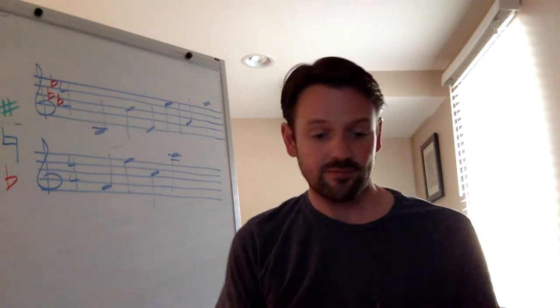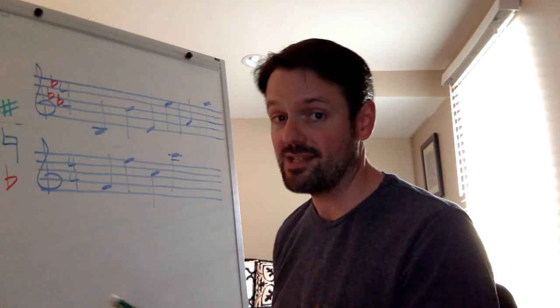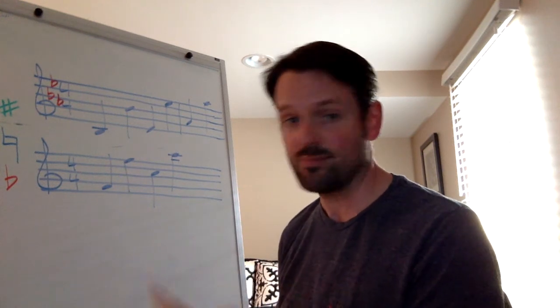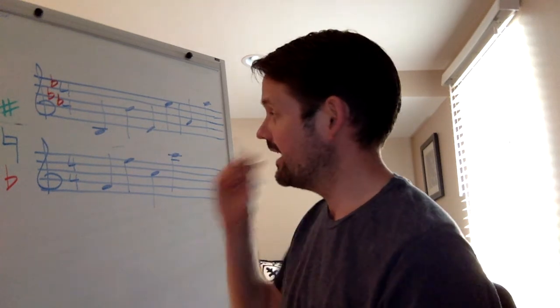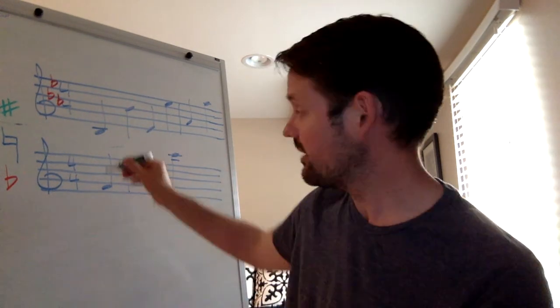Now when we look at the sharps, they come in a different order. The flats are always going to be B, E, A. One flat is always B, two flats always E, three flats is always A. In sharps, the first thing that's going to be sharp is F.